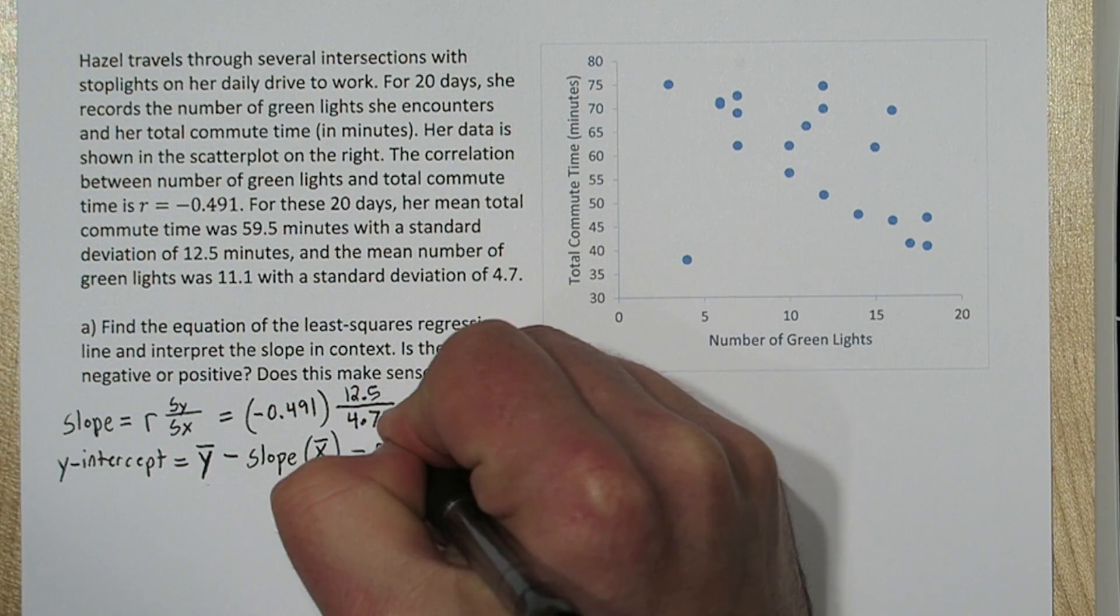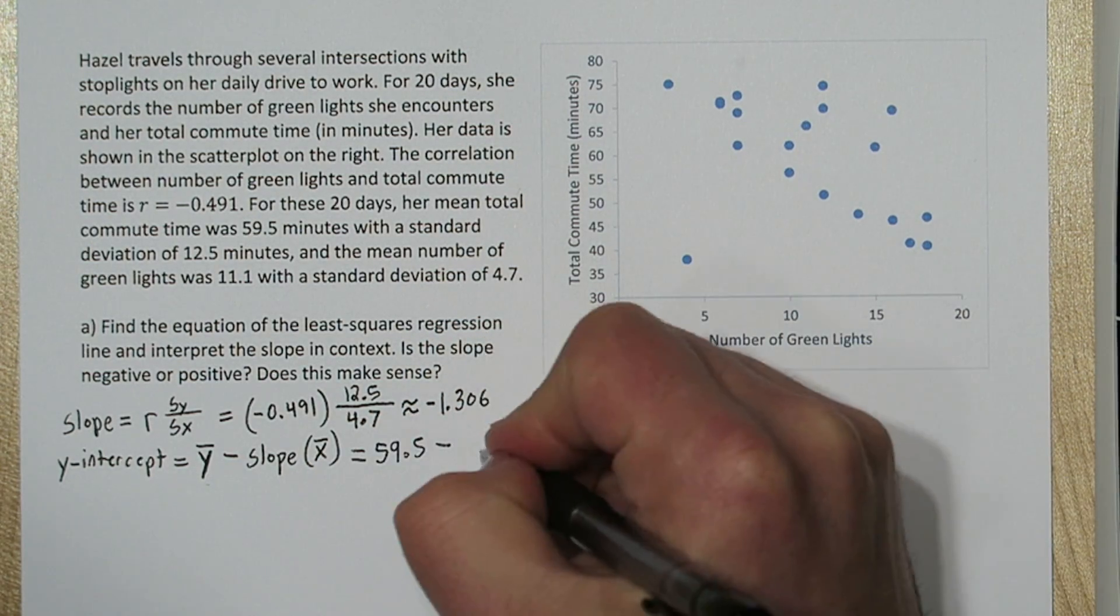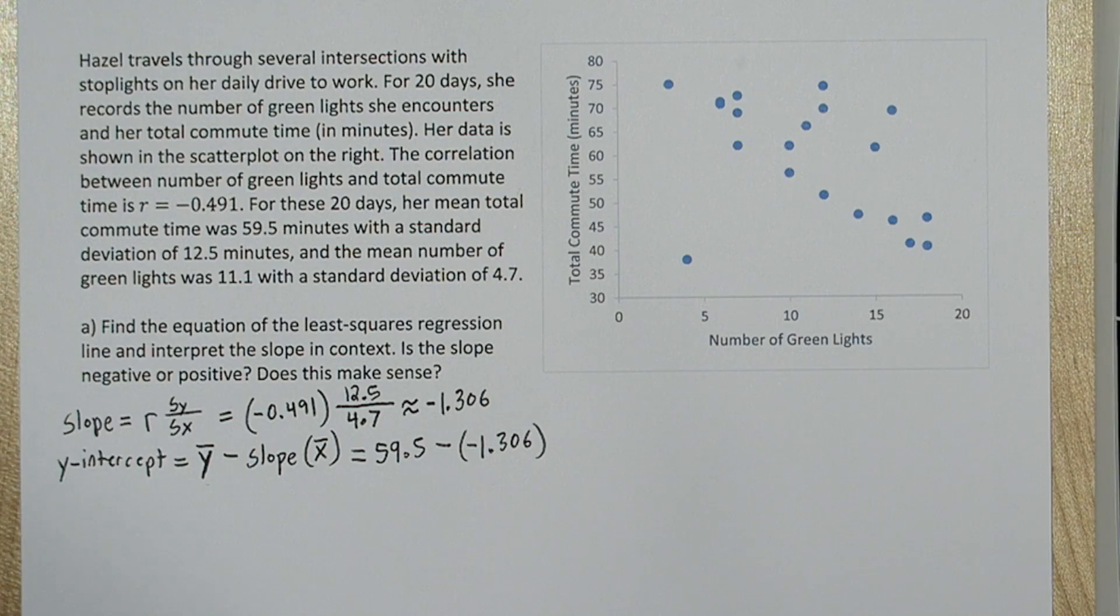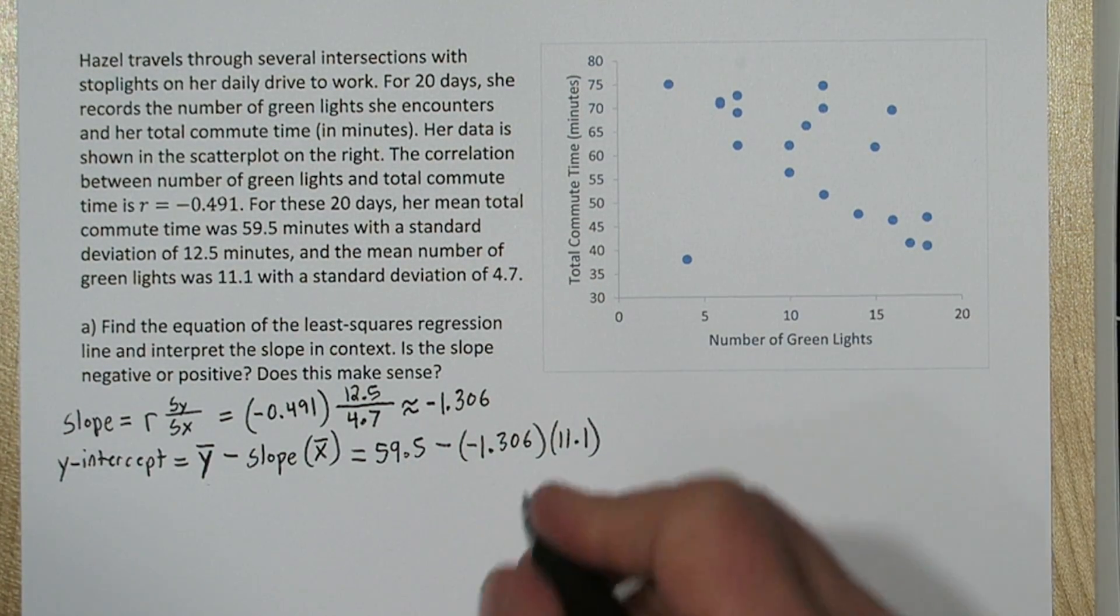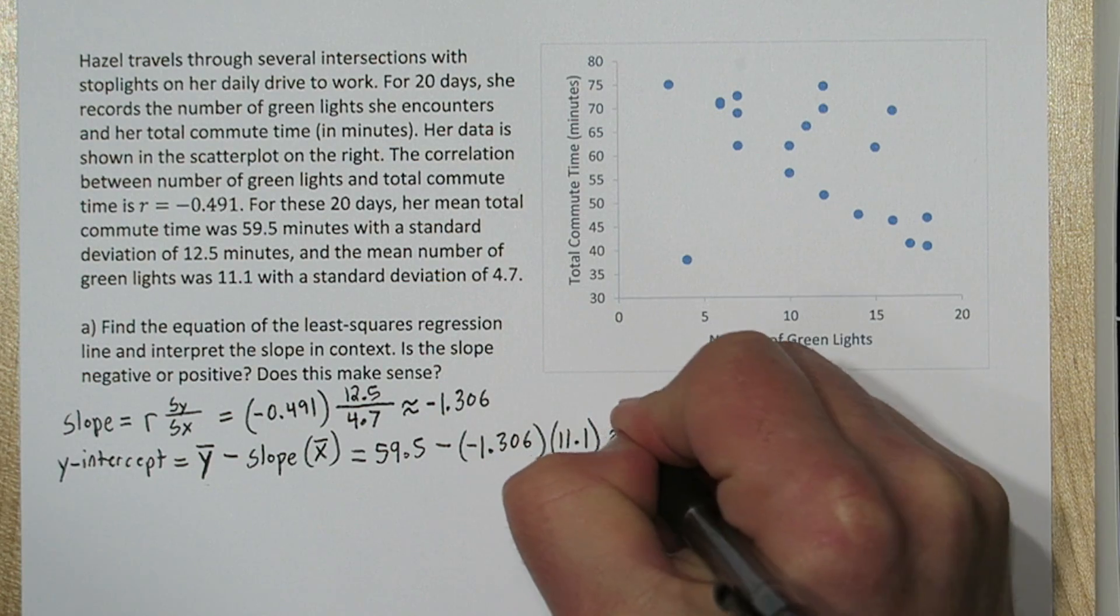So in this case, our average commute time was 59.5. We just found the slope above, and the average number of green lights was 11.1. So our y-intercept ends up being about 74.